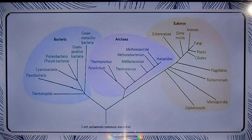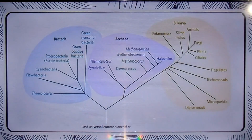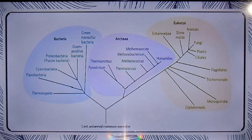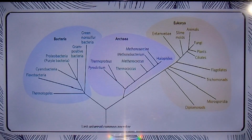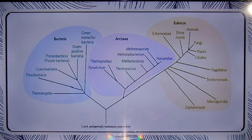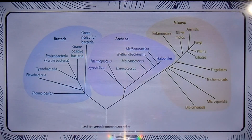All living organisms on Earth fall into one of three large domains. The two large groups of single-cell microorganisms can be distinguished on genetic and biochemical grounds: bacteria and archaea. Bacteria inhabit soil, surfaces, water, and the tissues of other organisms or decaying organisms.